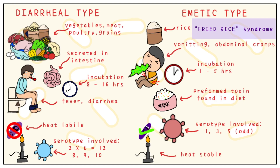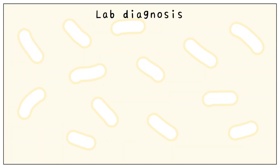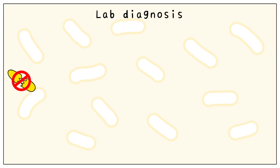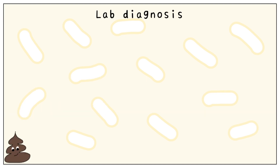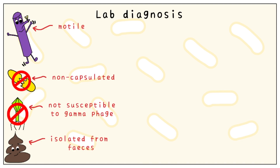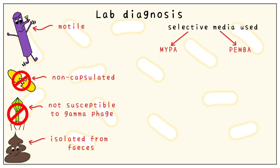For the laboratory diagnosis of Bacillus cereus, we look for these findings. It should be motile, non-capsulated, not susceptible to gamma phage, and isolated from feces. We require 2 selective media to culture Bacillus cereus: MYPA and PEMBA.